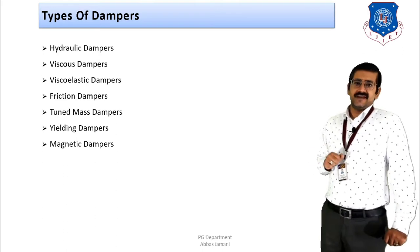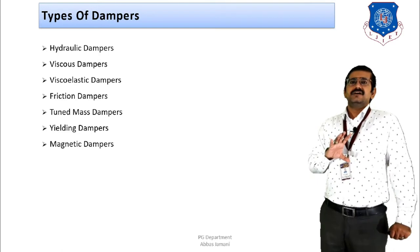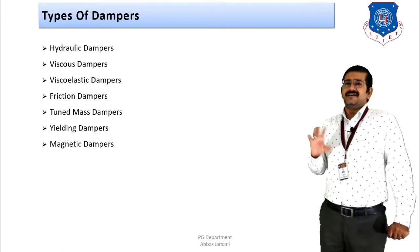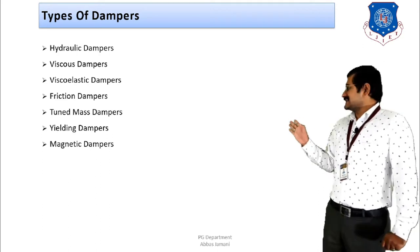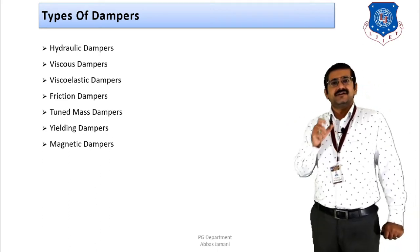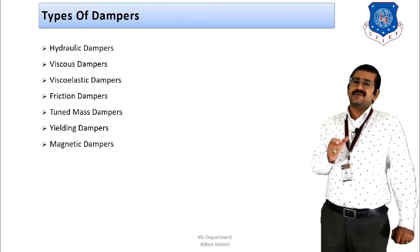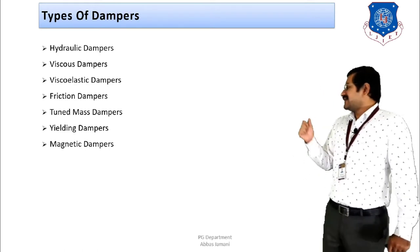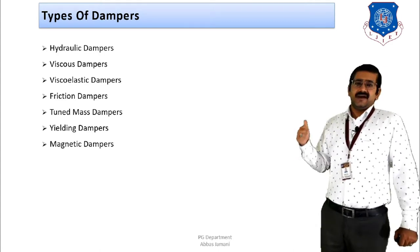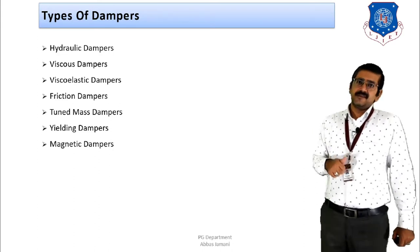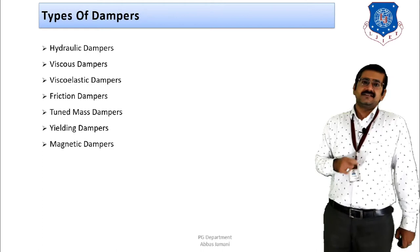Tuned mass dampers are passive vibration dampers that dampen the effect of seismic forces on the building. Yielding dampers use metal — yielding is a characteristic of metal — so the metal plays the role of the damper. Lastly, magnetic dampers consist of a magnet, a copper disk, and a piston. Let us look at each of these dampers one by one.